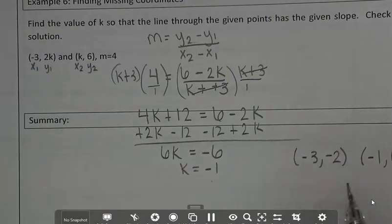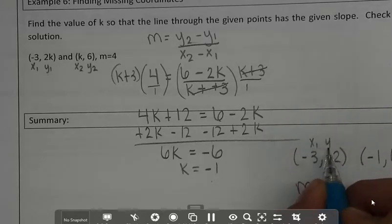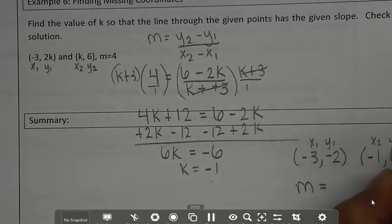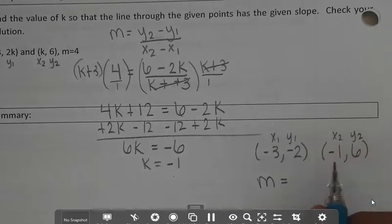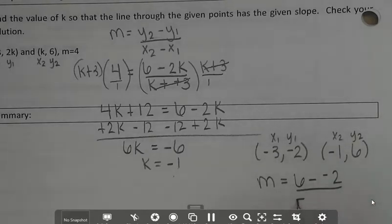So now I'm going to find the slope between these two. So slope being, and again I'll call this x1, y1, x2, y2. All right, so slope is y2 minus y1 over x2 minus x1.